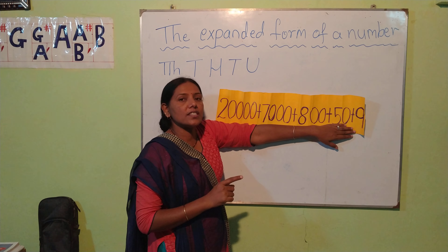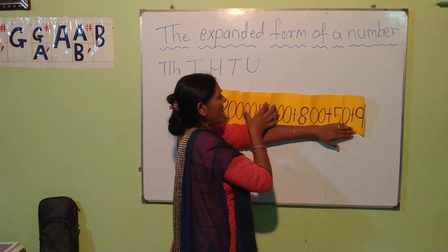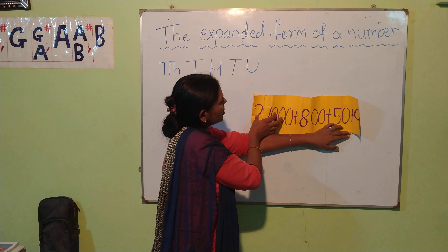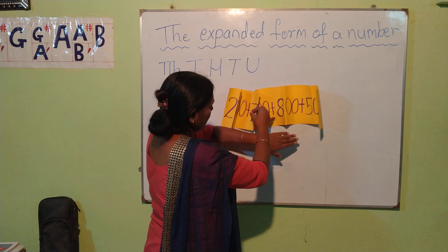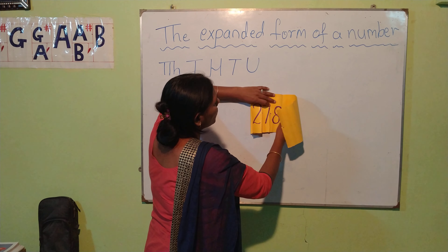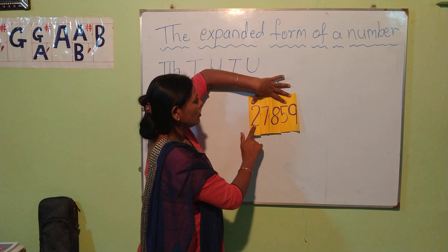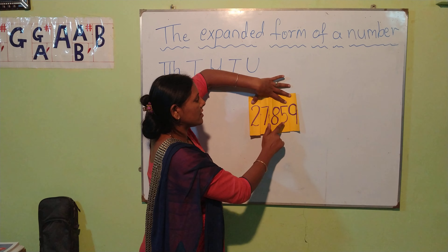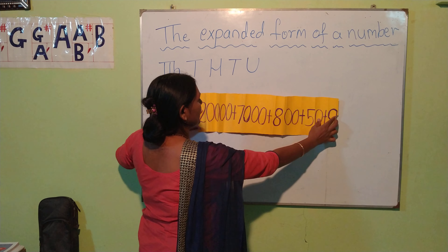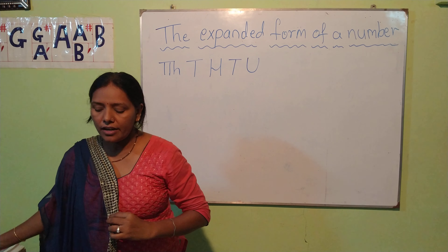So now we know the value of these numbers. When we add them like this, we get the whole number. Once again, we will bring the numbers back to their original place. This is the whole number: 27,859. When we expand it — means when we stretch it — we get the value of each number. Today we will learn this: expanded form.